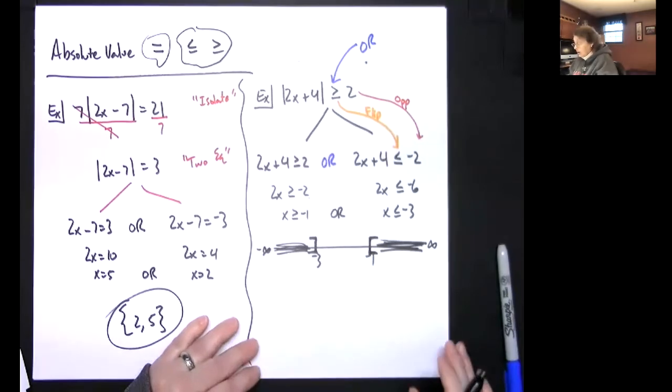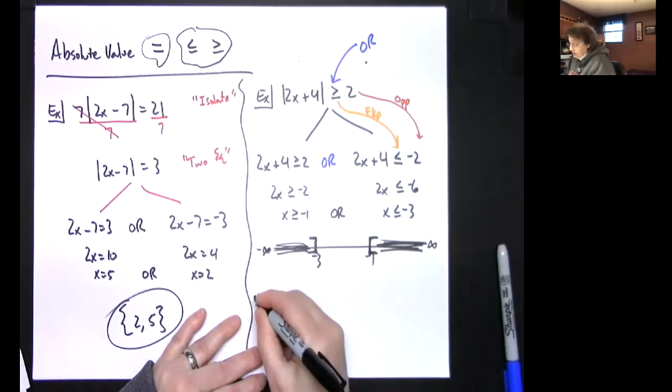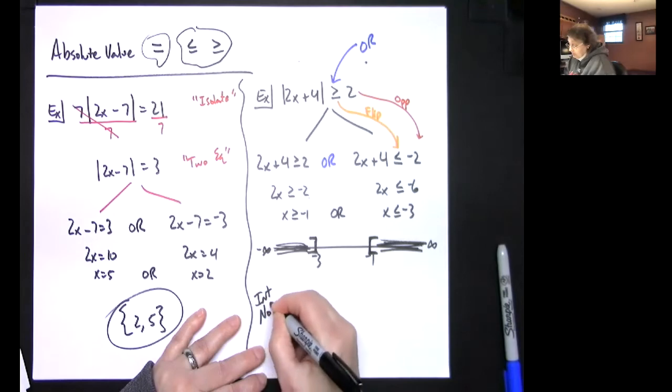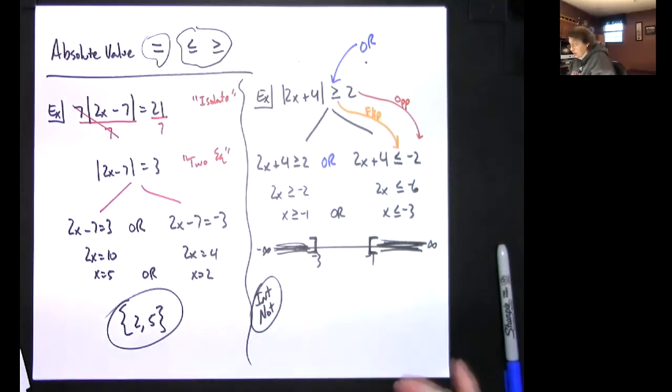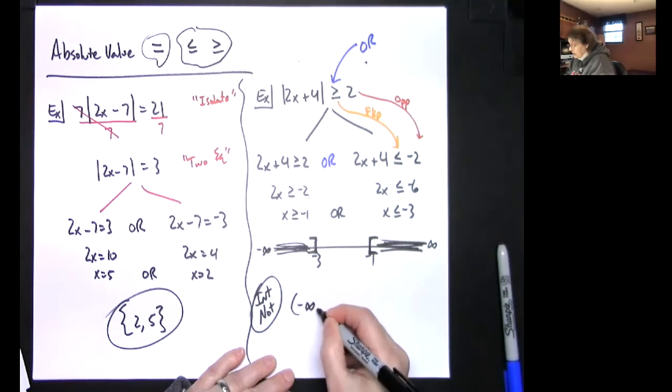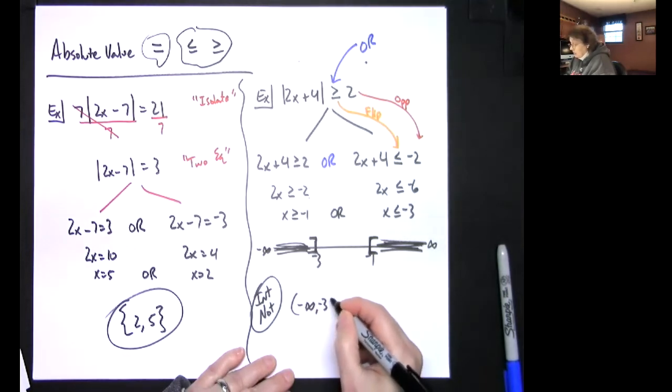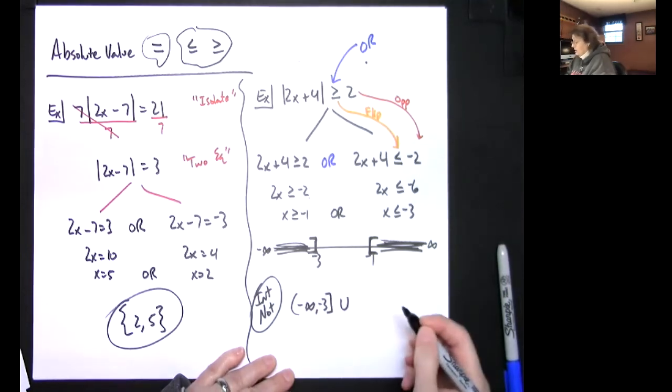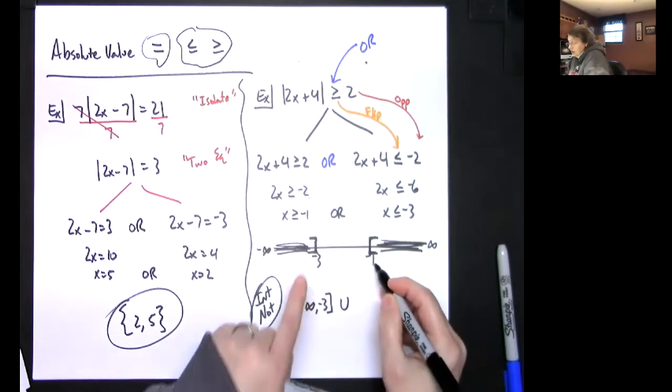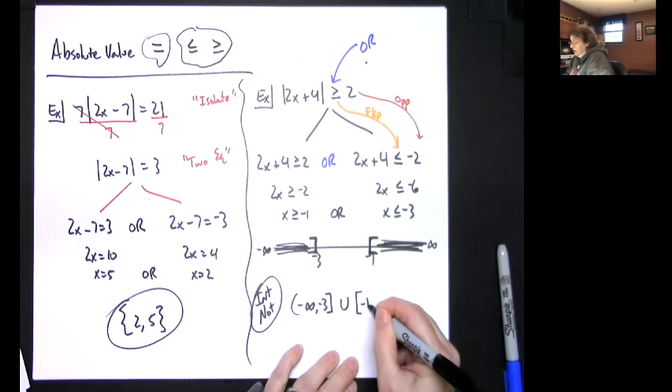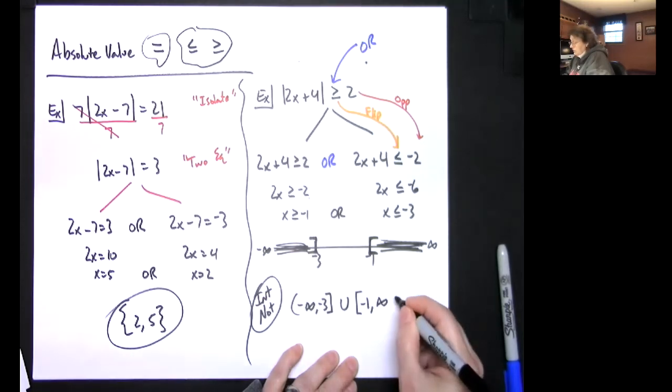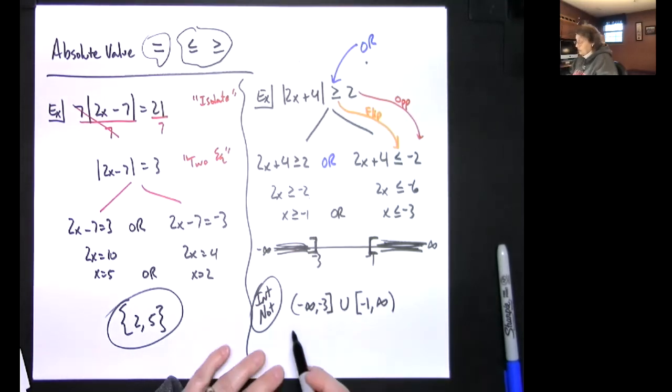If I wanted to now do interval notation, then I'm gonna have two shaded parts, I'm gonna have two sections. I'll have the negative infinity to negative 3 with a square bracket, and then skip over, this was negative 1, square bracket negative 1 to infinity. So then there's my interval notation.